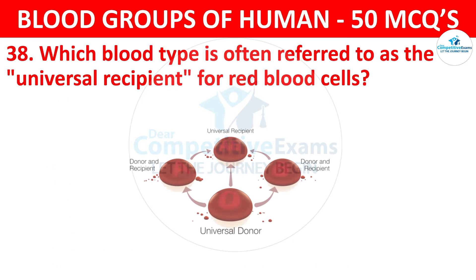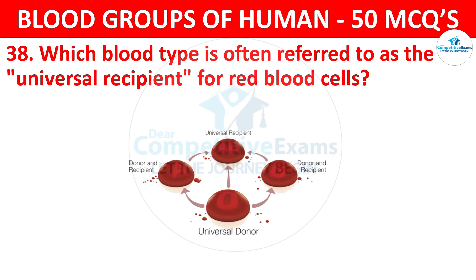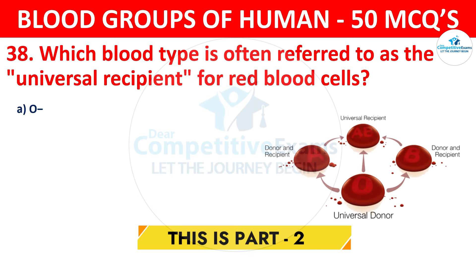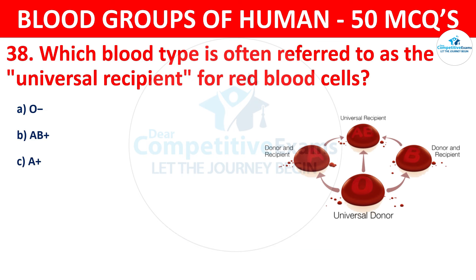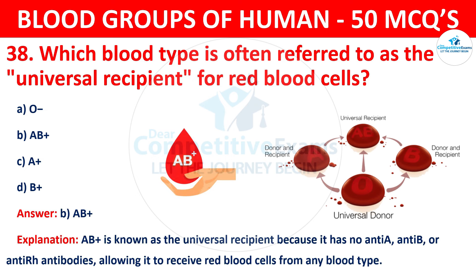Question 38: Which blood type is often referred to as the universal recipient for red blood cells? The correct answer is B, AB positive. AB positive is known as the universal recipient because it has no anti-A, anti-B, or any RH antibodies, allowing it to receive red blood cells from any blood type.